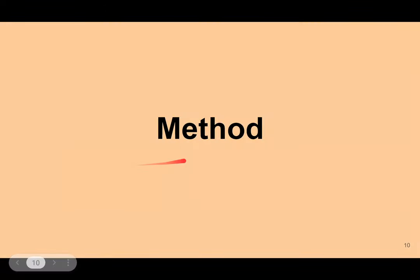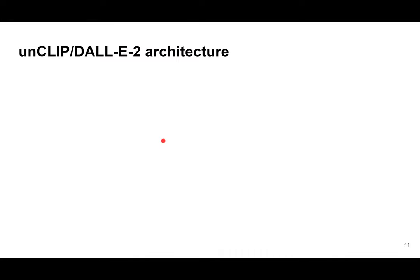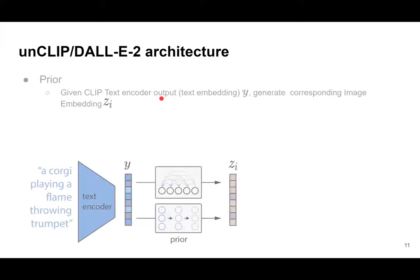I will talk about more detail of the DALL-E 2 method and how they implement the overall architecture. The paper calls it 'unCLIP,' and we also call it DALL-E 2 — these two names refer to the same thing. The paper consists of two parts: the first part is a prior, which converts the output from the CLIP text encoder into an image embedding; and the second part is a decoder, which takes the output from the prior and decodes it into the image we want to generate.